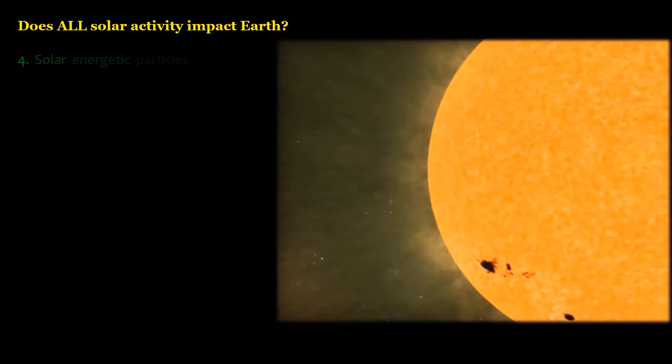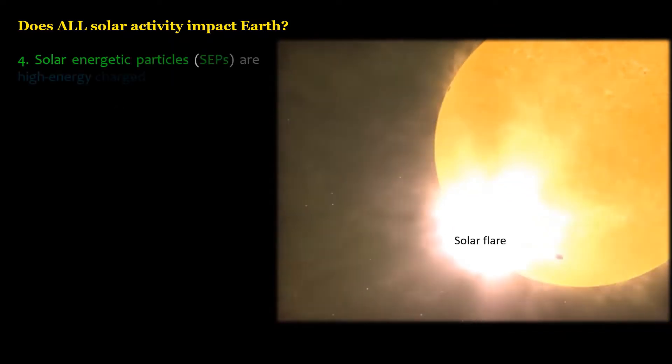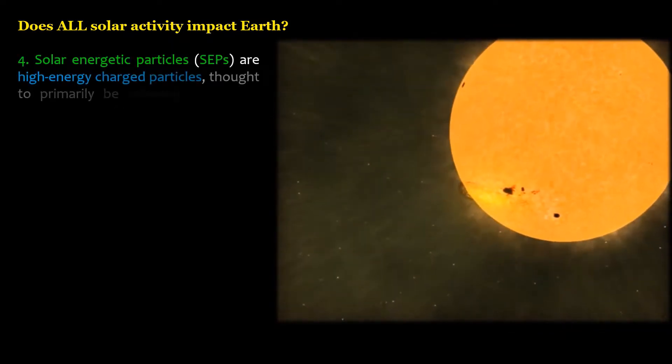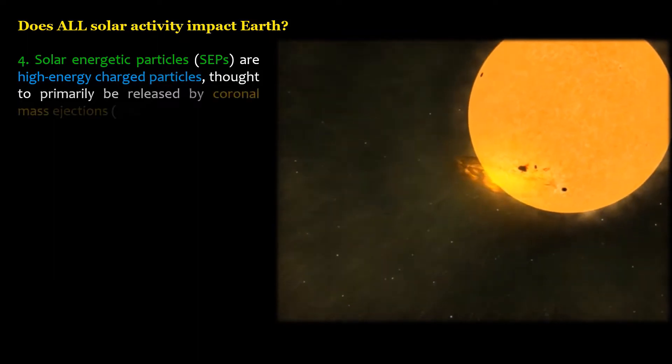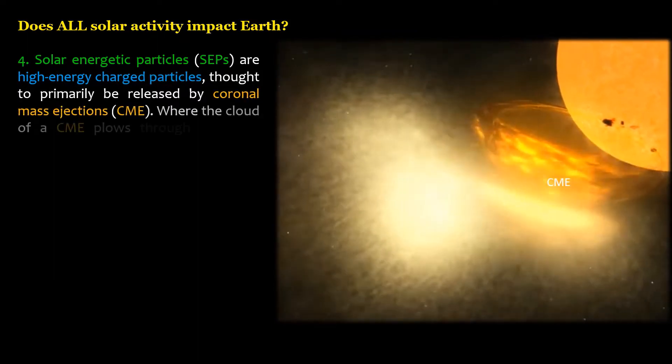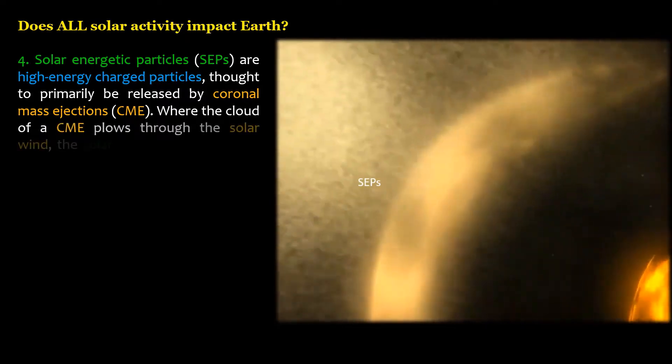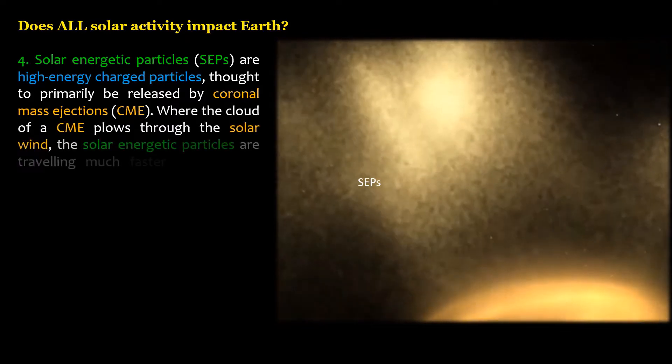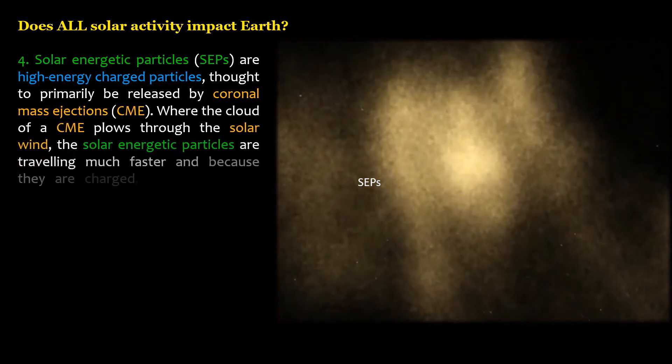Solar energetic particles, SEPs, are high energy charged particles, thought to primarily be released by coronal mass ejections. Where the cloud of a CME plows through the solar wind, the solar energetic particles are traveling much faster and because they are charged, must follow the magnetic field lines that pervade the space between the sun and the Earth.